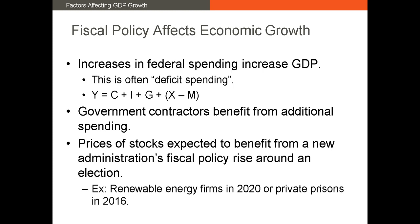For example, if Congress declares war on Russia, defense spending would likely increase and government contractors providing military support would benefit. If the increase in spending involves payouts to individuals, as was the case in 2020 during the start of the COVID-19 outbreak in the U.S., businesses that provide goods and services to individuals would likely prosper.